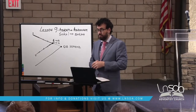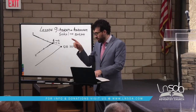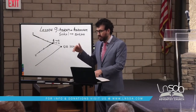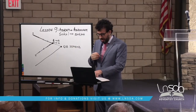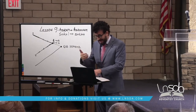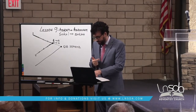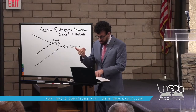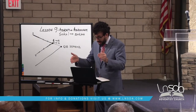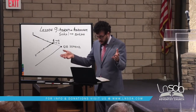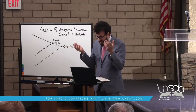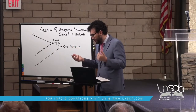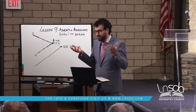Abraham believed in the Lord. He was 86, had no children. The Lord tells him he will have an heir coming from his own body — the Hebrew says 'your own loins' — and Abraham believed in the Lord, and he accounted it to him for righteousness. Then God said, 'I am the Lord who brought you out of Ur of the Chaldeans to give you this land.' And Abraham said, 'Lord God, how shall I know that I will inherit it?' So he believed in the Lord, but he still has questions, because he's 86 and has no biological children.